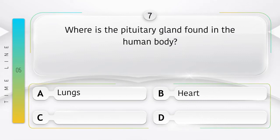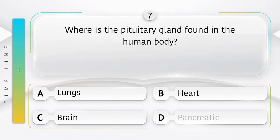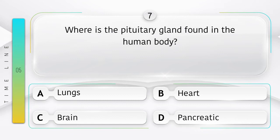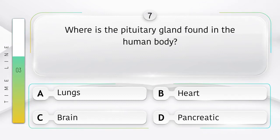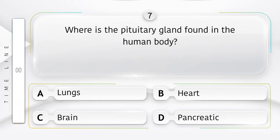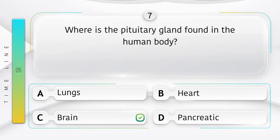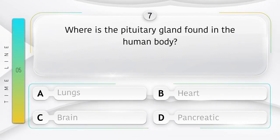Where is the pituitary gland found in the human body? Option A: lungs, B: heart, C: brain, D: pancreas. Answer is option C: brain.